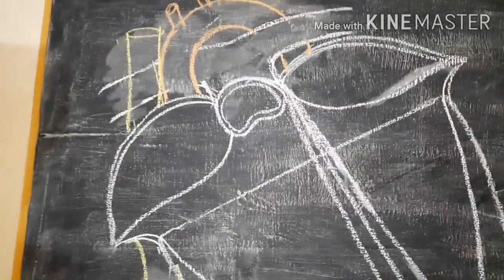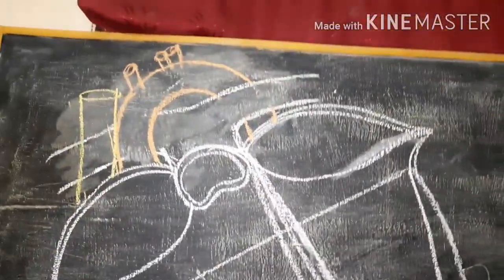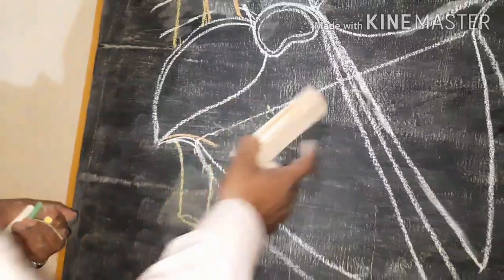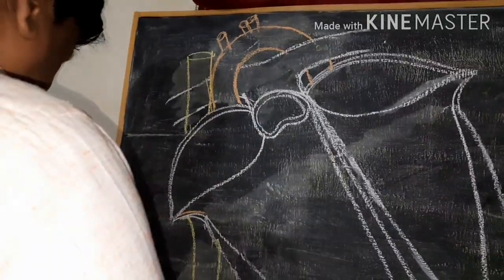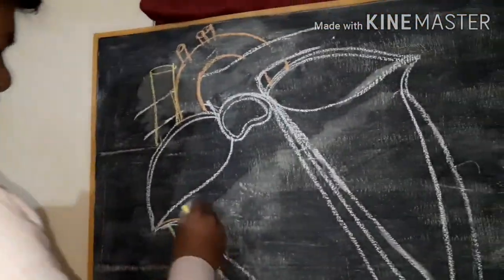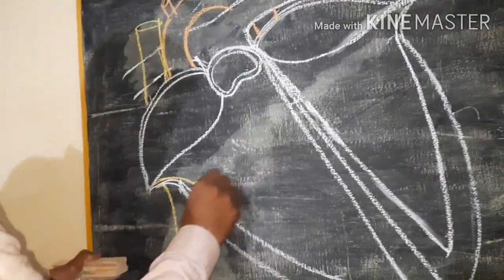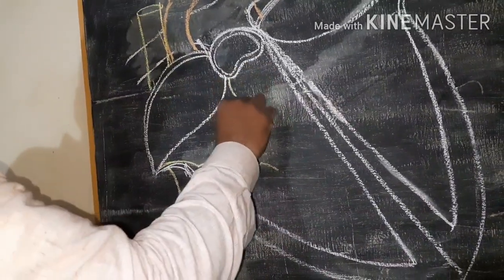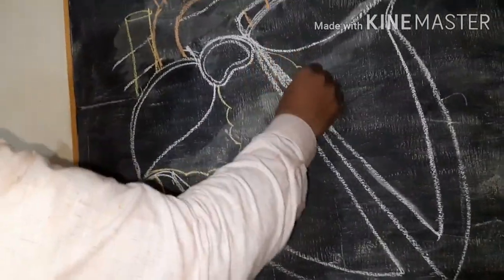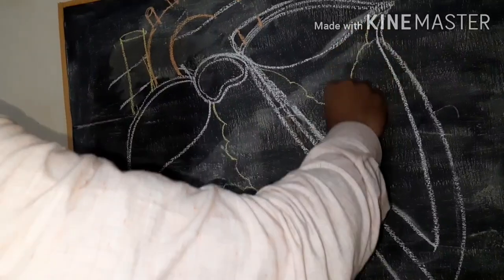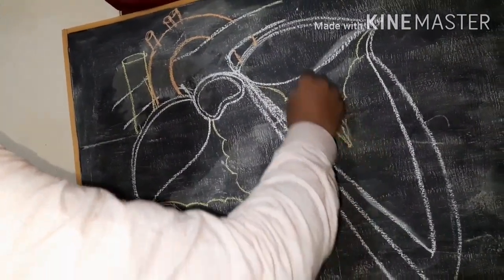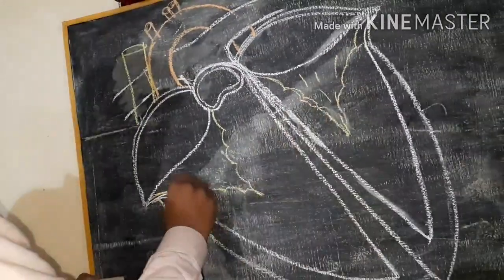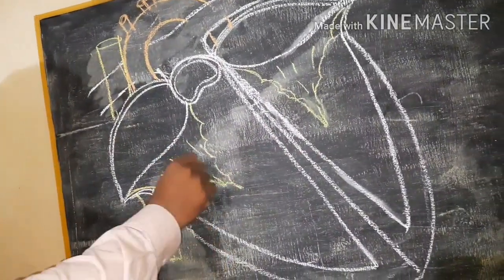Now friends, we have to draw the tricuspid — first of all you should arrange this. You should draw the tricuspid and bicuspid valves like this.